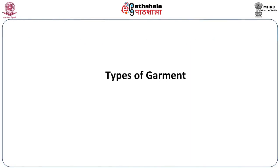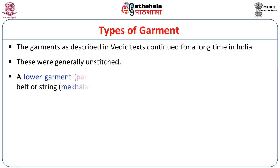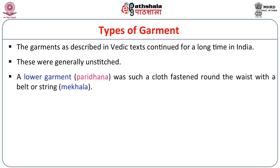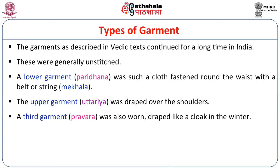Now let us come to the types of garments. We shall start with the Vedic period, where we find that the dresses represented in Vedic texts continued for a long period. These were generally unstitched. A lower garment called paridhana was a cloth fastened round the waist with a belt or string known as the mekhola. The upper garment is uttariya, which was draped over the shoulders. There was also a third garment, pravara, which was worn draped like a cloak in winter.